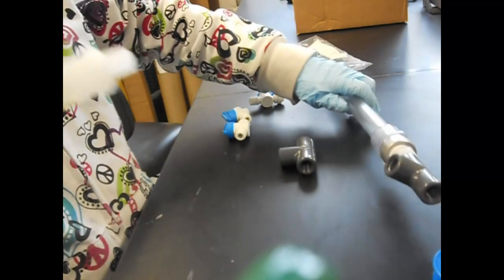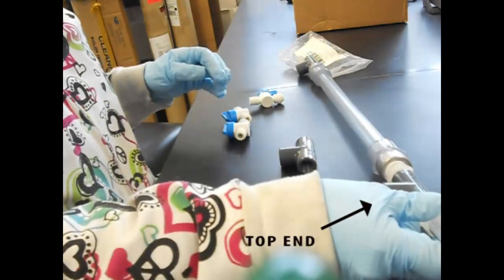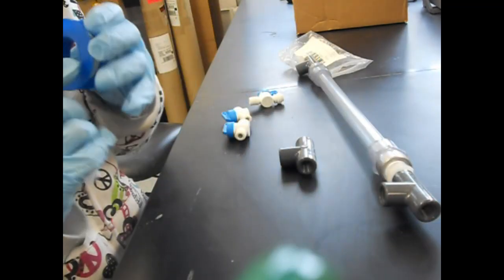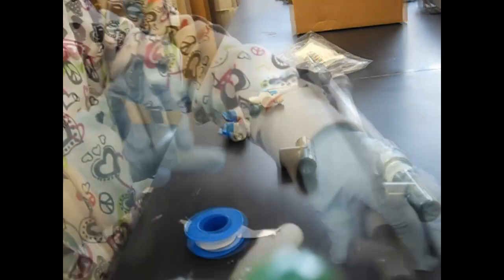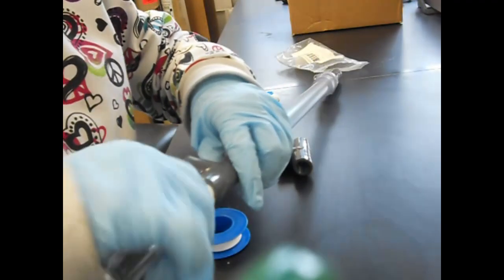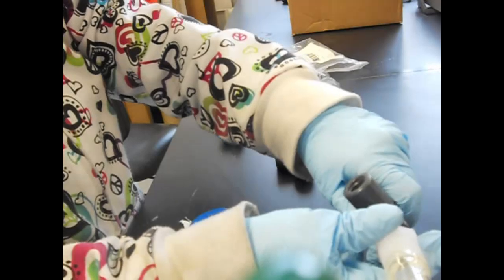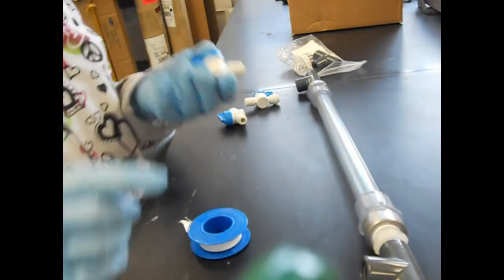For the top end, you need to put this glue tube on the side. Put all these valves on.